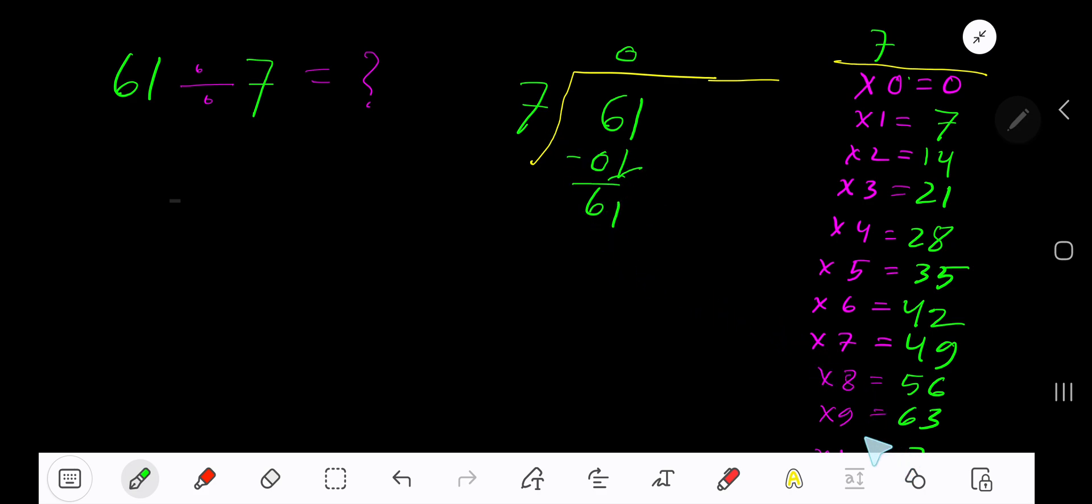7 goes into 61 how many times? 9 times 63, which is greater, so 8 times. 8 times 7 gives you 56. Subtract and you get 5. This 5 is a remainder, so your answer is 8 remainder 5.